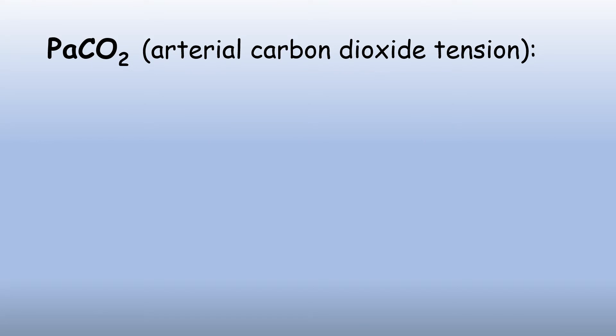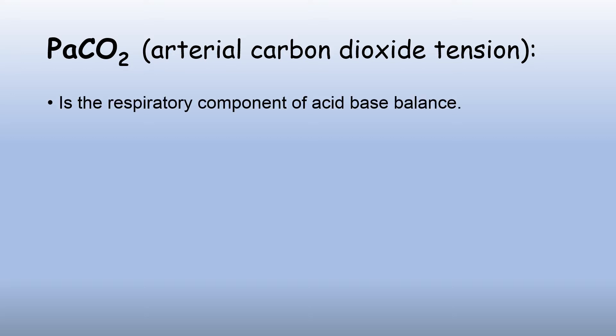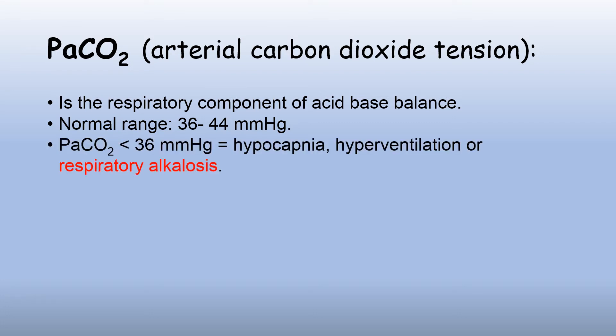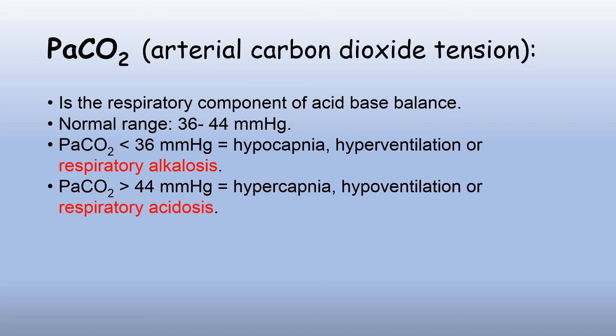Arterial carbon dioxide tension, otherwise known as PaCO2, is the respiratory component of acid-base balance. Normal range is between 36 to 44 mmHg. When PaCO2 is less than 36 mmHg, there is hypocapnia and hyperventilation, which is called respiratory alkalosis.